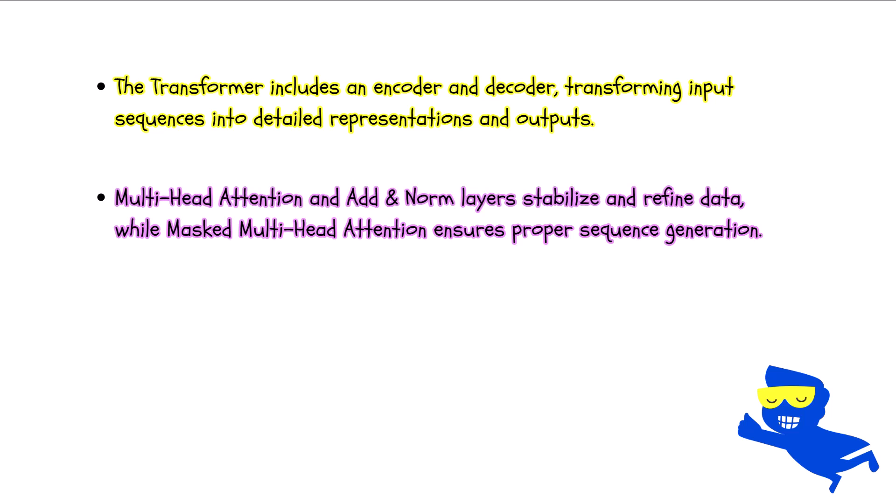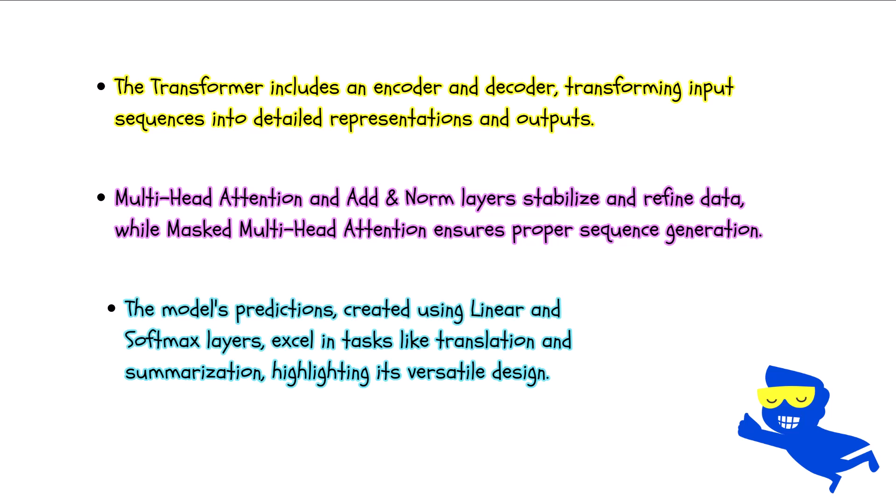In the encoder and decoder, multi-head attention plays a central role by allowing the model to focus on various aspects of the input data simultaneously. This attention mechanism is complemented by add and norm layers to maintain stability and prevent information loss. The feedforward networks provide further refinement, ensuring that the data is processed efficiently and effectively. The decoder's unique feature, the masked multi-head attention, ensures proper sequence generation by preventing the models from seeing future tokens during training. The final stage involves converting the refined data into probabilities using a linear layer followed by a softmax function. This produces the model's predictions, such as translating a sequence or generating text.